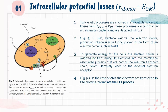Coming into Part 1 of Section 2, the Intracellular Potential Losses: two kinetic processes are involved in intracellular potential losses from E-donor to E-OM. These processes are common in all respiratory bacteria and are depicted in Figure 5. First, bacteria oxidize the electron donor, producing intracellular reducing power in the form of an electron carrier such as NADH. To generate energy for the cells, the electron carrier is oxidized by transferring its electrons into the membrane-associated proteins that are part of the electron transport chain, which ultimately leads to the external electron acceptor. In the case of ARB, the electrons are transferred to OM proteins that initiate the EET process.